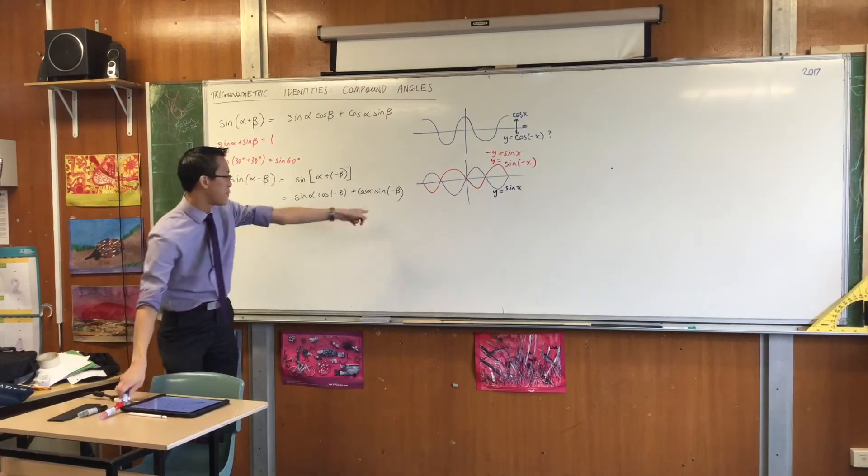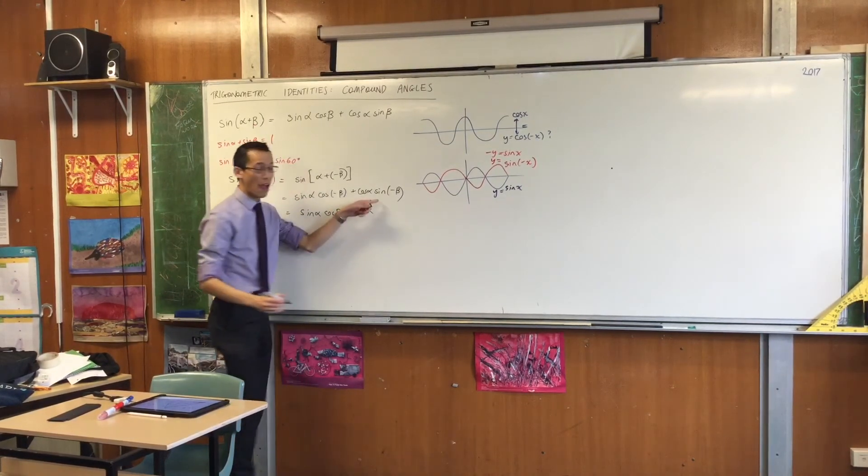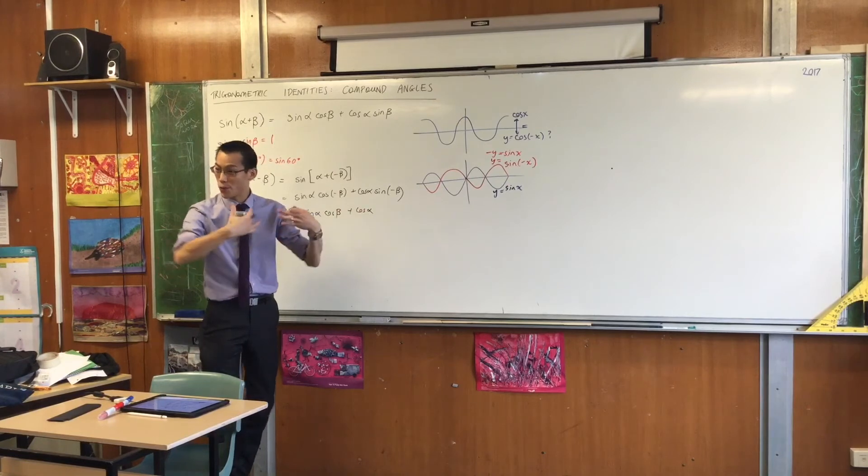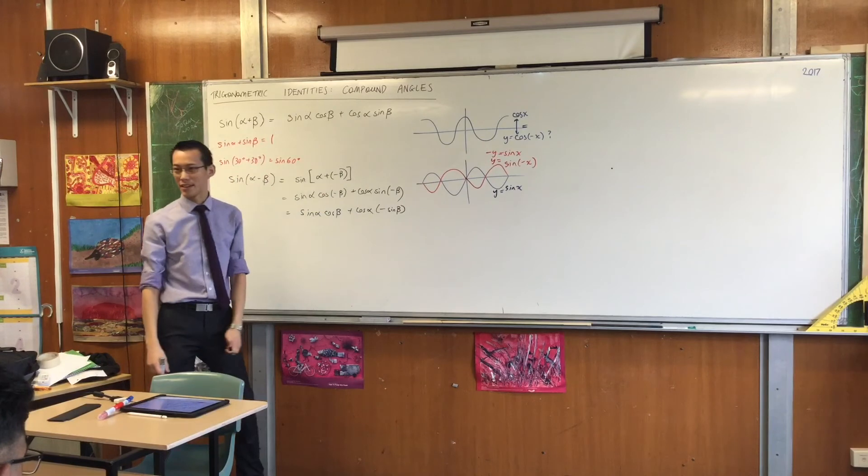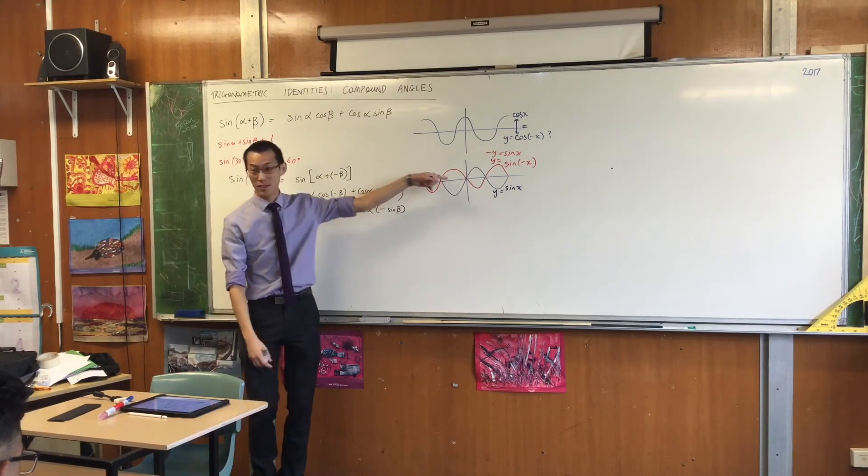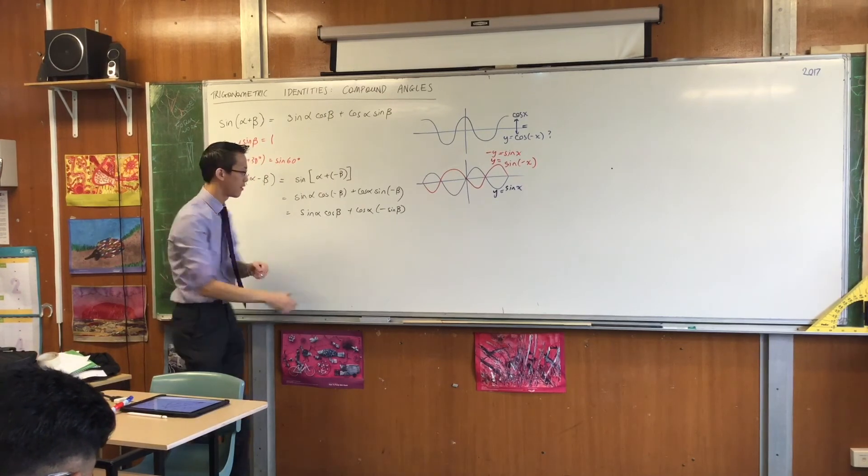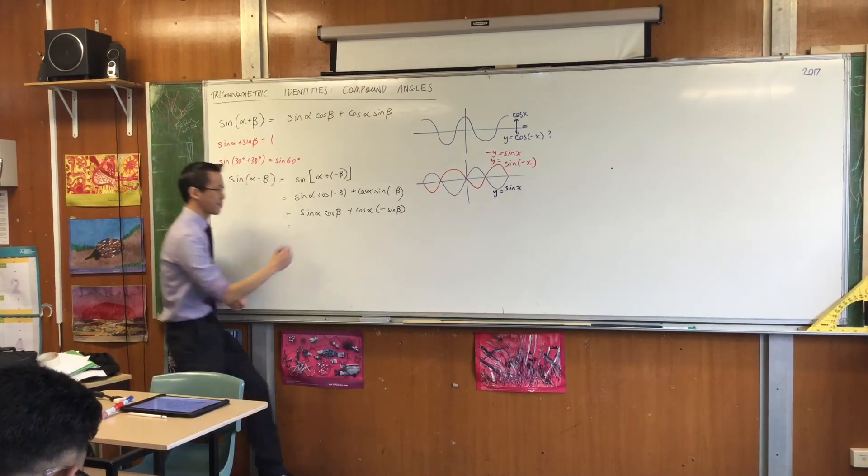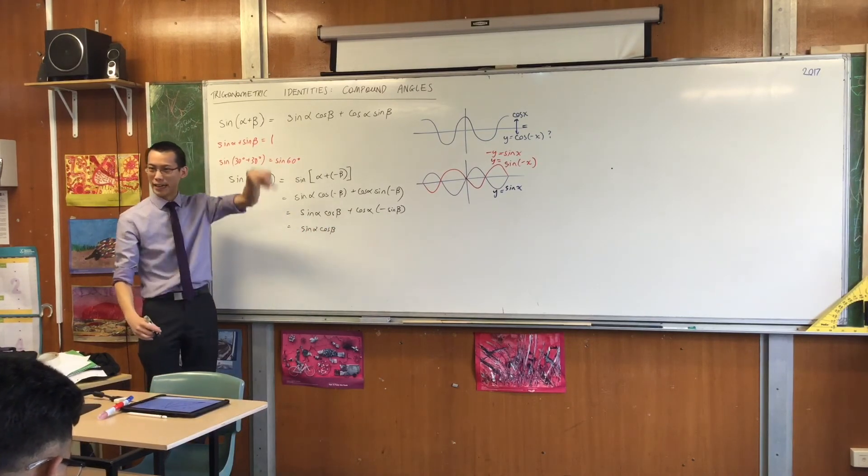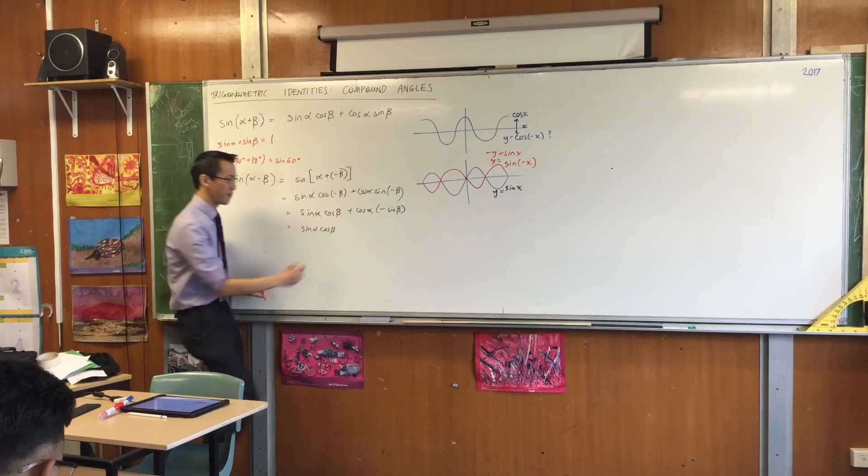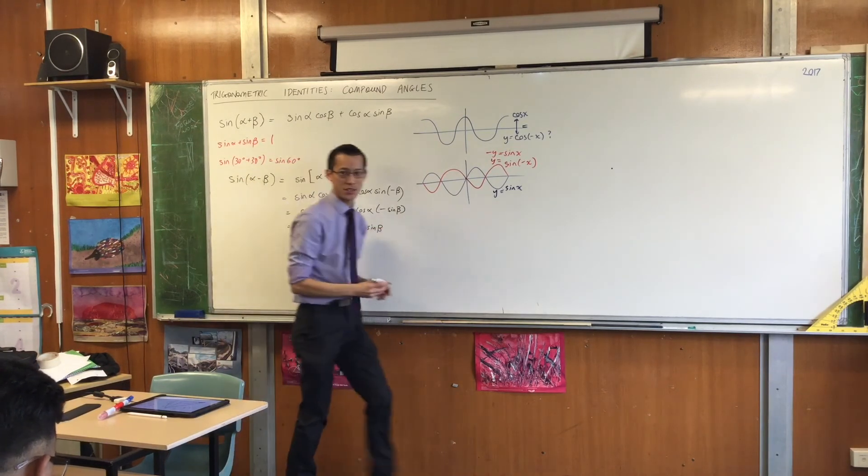So, now, come back to our identity over here. This sine of negative beta, I'm going to rewrite it as negative sine beta. Okay? By virtue of this transformation key. So, in this case, doing it that way, ends up being the same as doing it that way. Alright, I'm almost finished. This guy out the front, I've already dealt with. That negative sine, I'm going to bring it out the front of that term and make it minus. Do you see what I've done?